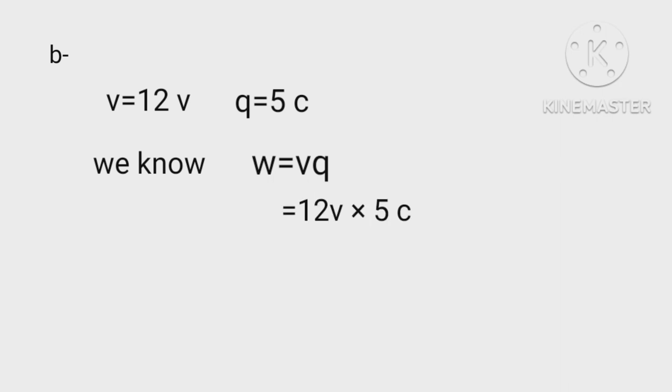Moving on to part B of question. Given as V equals 12 volt, Q equals 5 coulomb. We know W equals VQ equals 12 volt times 5 coulomb equals 60 joules.